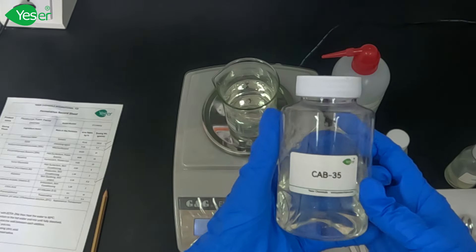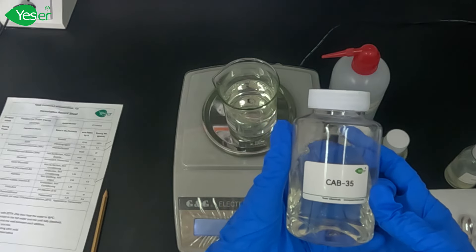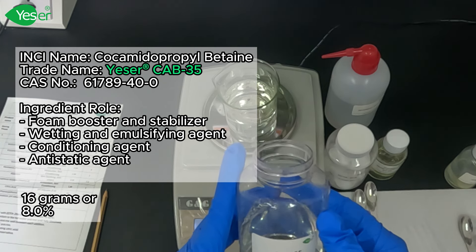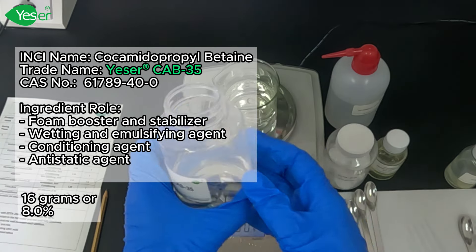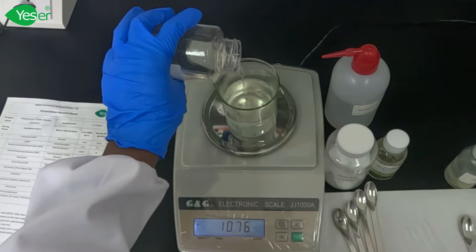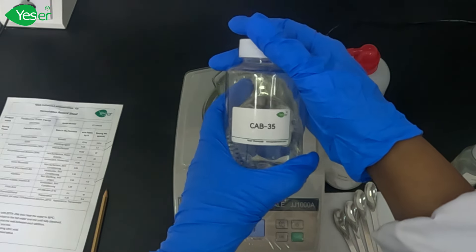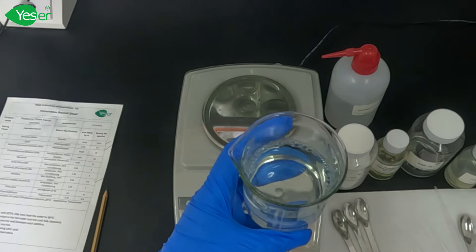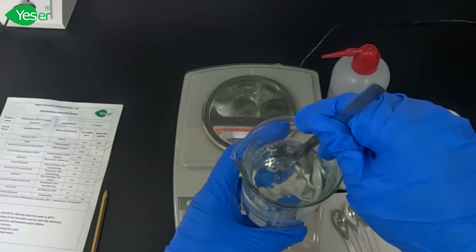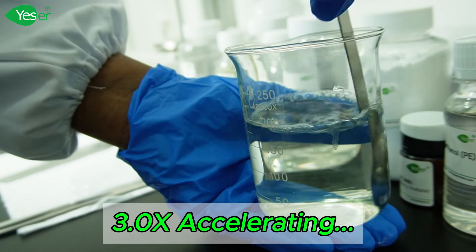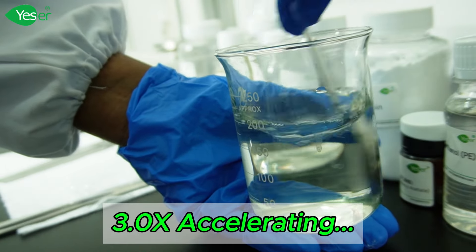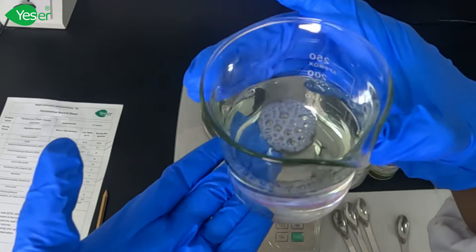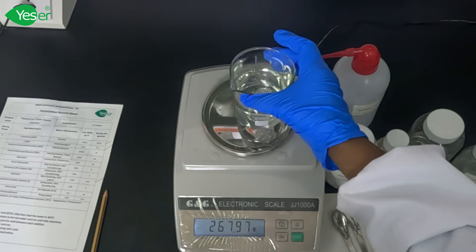After our first surfactant is fully dissolved and mixed, we're going to go further with another addition, which is our CAB35, cocamidopropyl betaine. From CAB in this formula, we need 8%, which is equivalent to 16 grams. CAB is also a mild surfactant and foam booster.